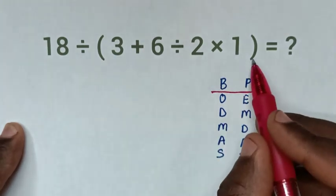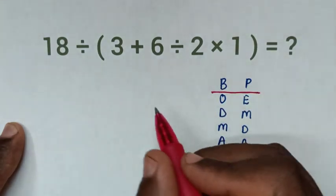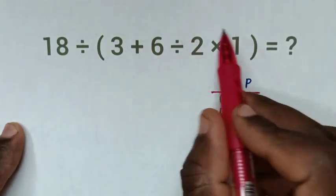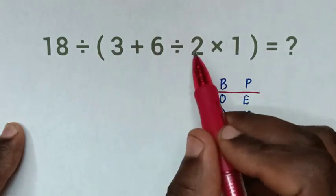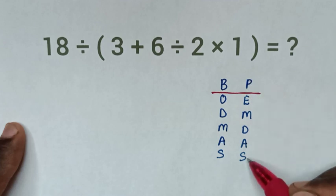In here, we have bracket or parenthesis. So, we'll start to deal with this operation inside the bracket or parenthesis by following this BODMAS rule or PEMDAS rule.